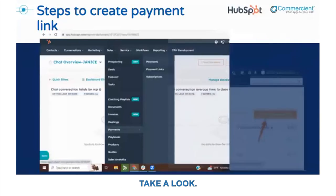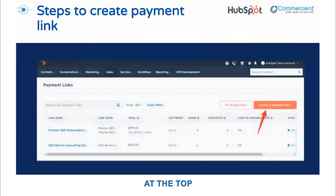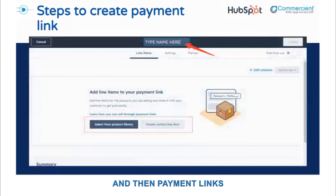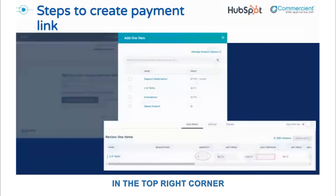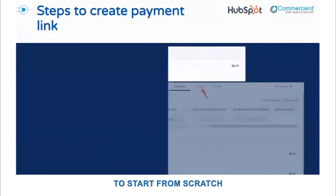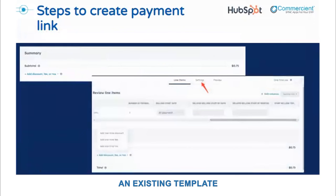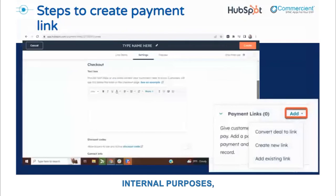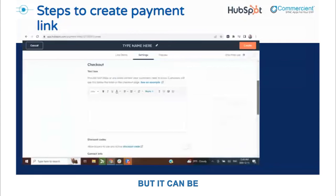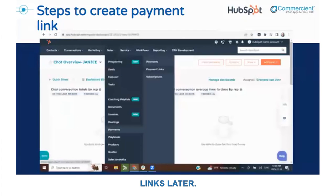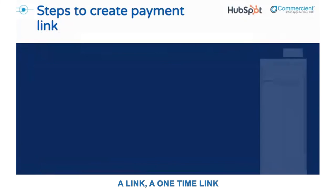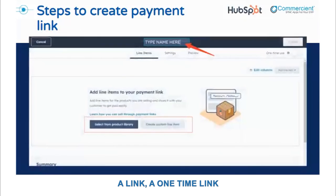You can create payment links two ways: either from the payment links page or from an individual CRM record. Go to your Sales icon in the top navigation bar, select Payments, then Payment Links. In the top right corner, click Create Payment Link. You can choose to start from scratch or use an existing template. At the top, you can name your link — this is just for internal purposes, but it can be very useful for finding your links later. On the right, you can also choose to make the link a one-time link if desired.